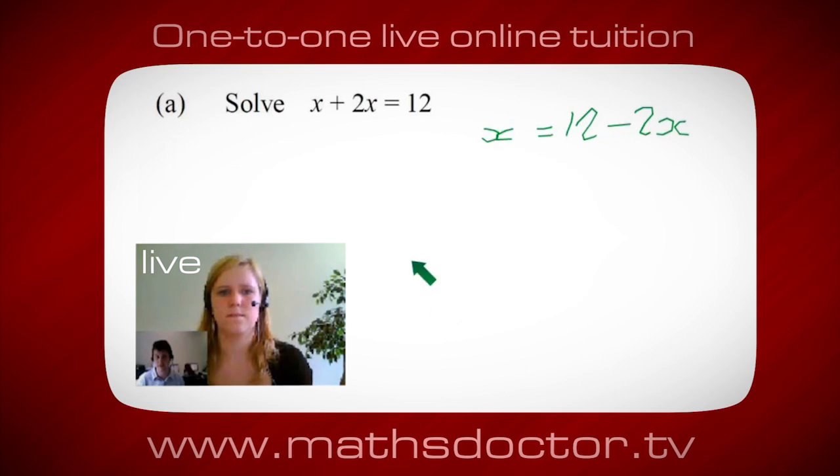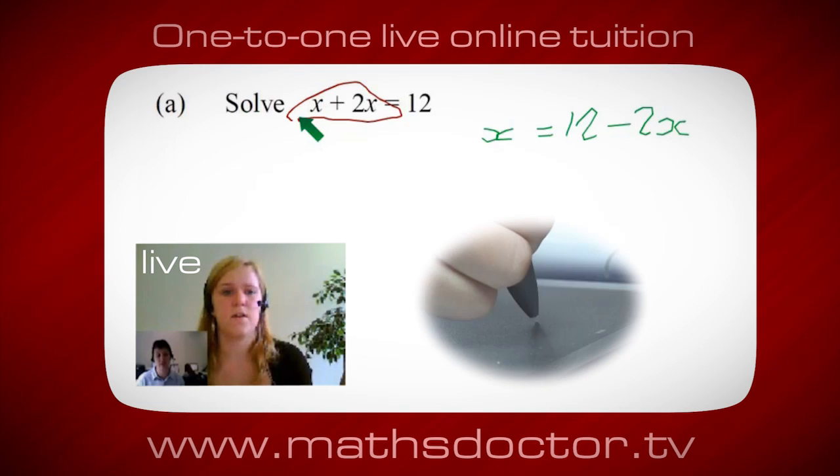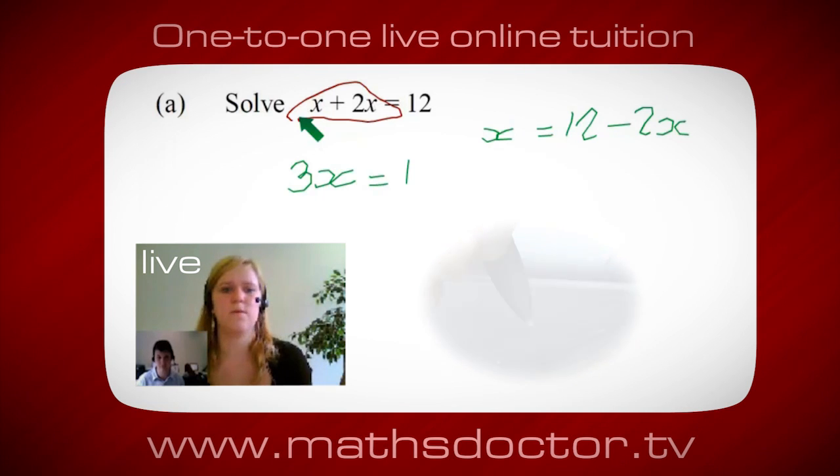So a lot of the time we want to get x by itself. But what we want to do first is get all of these x's together. So can you see anything we can do with this? Get all these together in one place. Oh, okay. It's 3x, isn't it? Yeah, absolutely. So 3x equals 12.